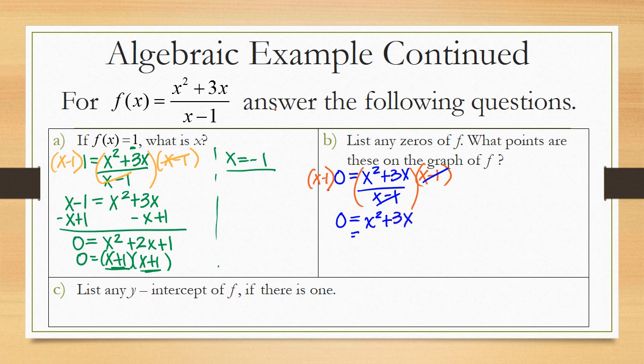So now again, I'll solve this by factoring. I can factor an x out. And I'm left with x plus 3. This means that the function is going to equal 0 when either x is 0 or x plus 3 equals 0, which will happen when x is negative 3. So the zeros of f are negative 3 and 0.